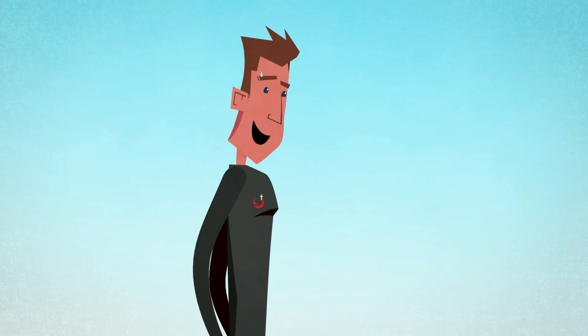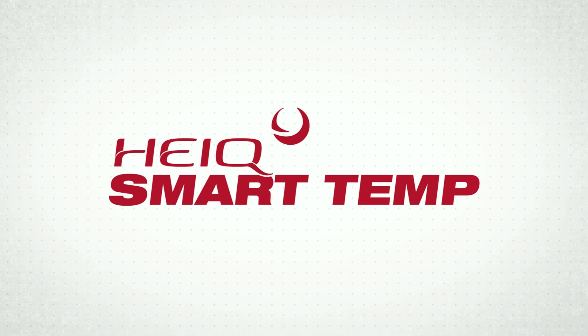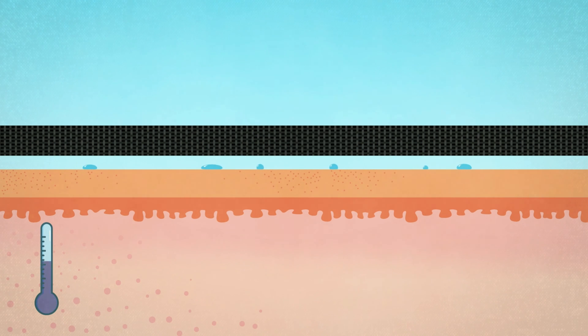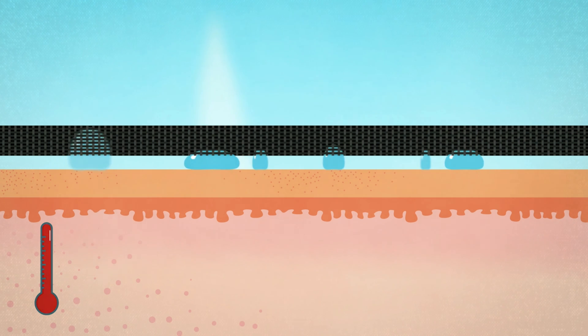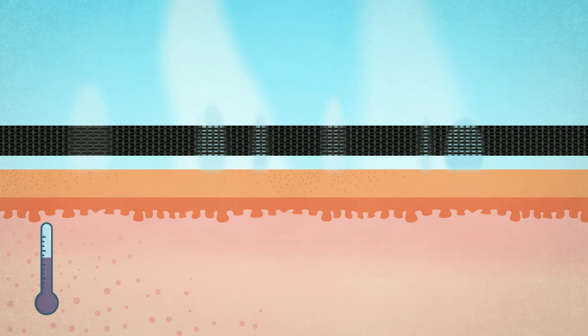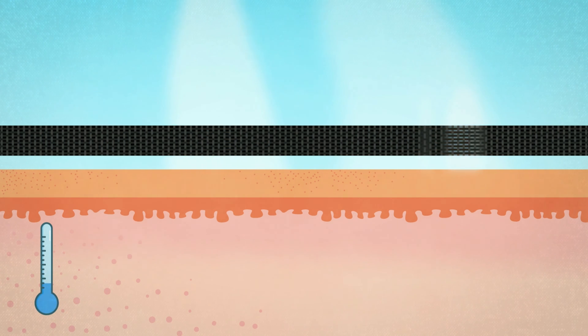So we developed HIQ Smart Temp, the world's first dynamic cooling treatment for clothes. HIQ Smart Temp senses any increase in body temperature and perspiration, and makes your clothes evaporate moisture faster when you're hot and slower when you're cool.